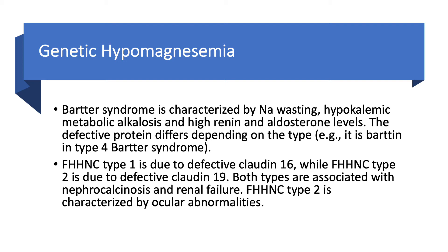You have high renin and high aldosterone levels, and the defective protein depends on the type — whether it is type 1, 2, 3, or 4. For example, in type 4 Bartter syndrome, it is Barttin.